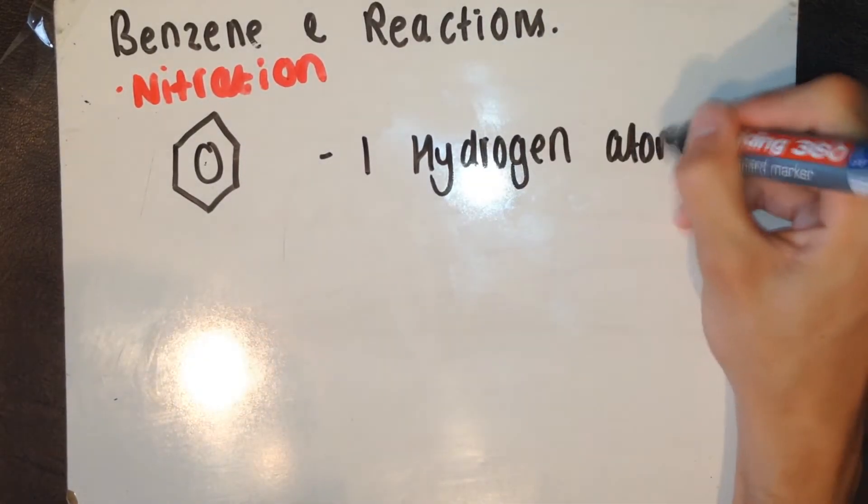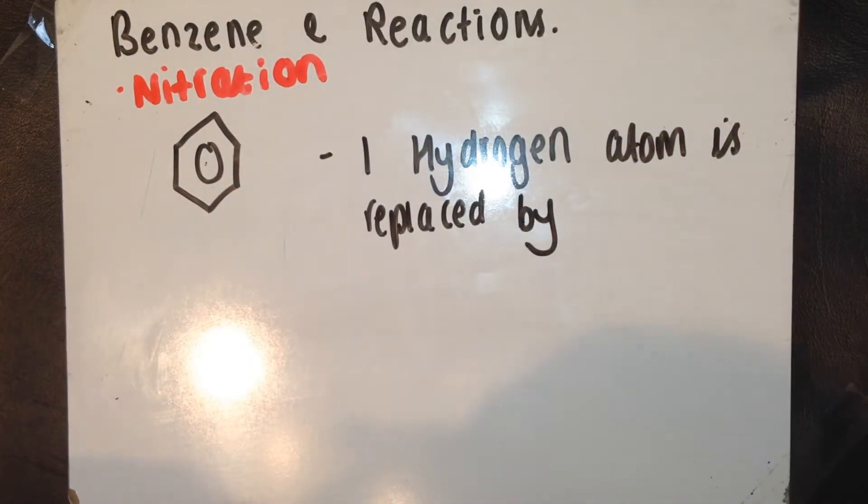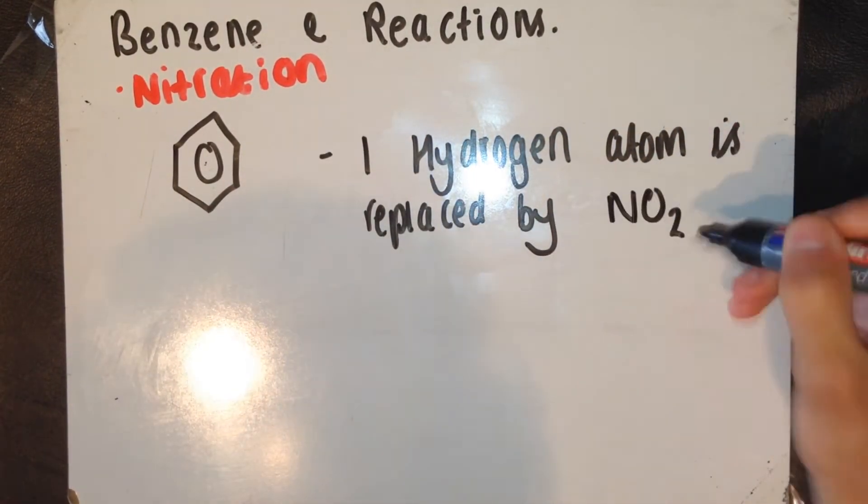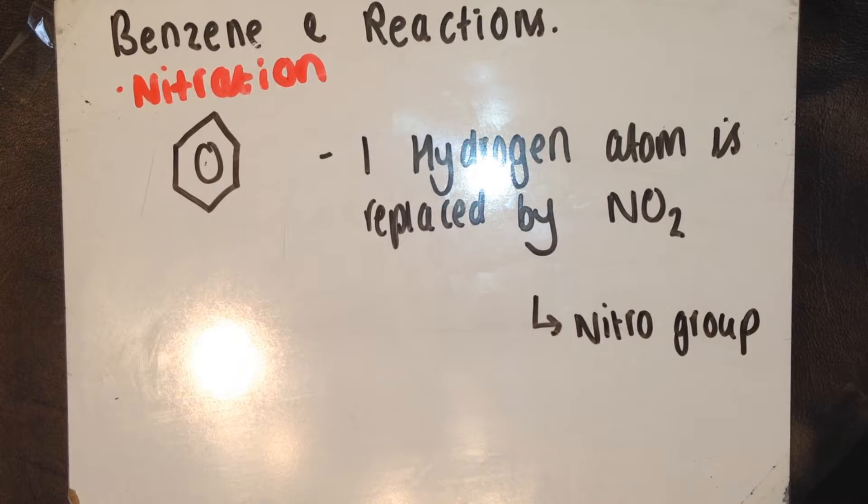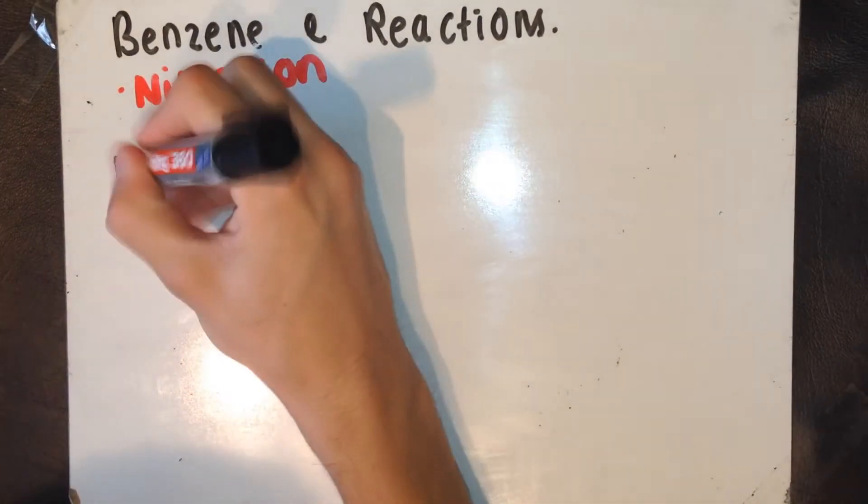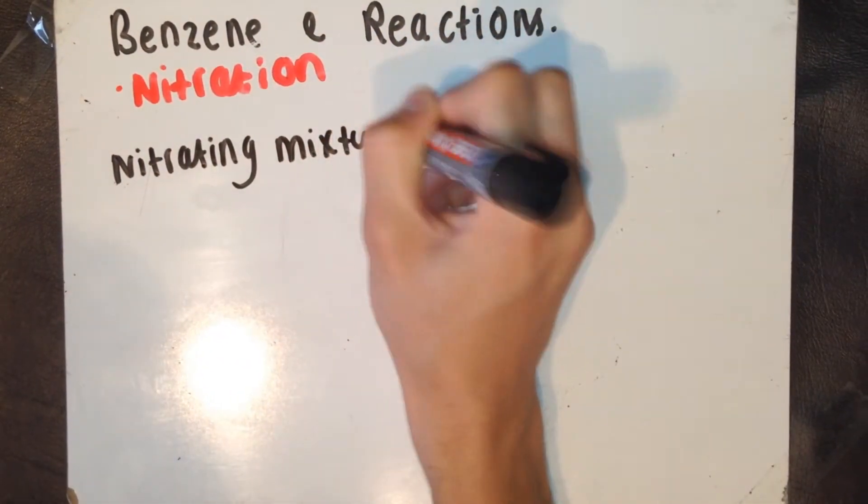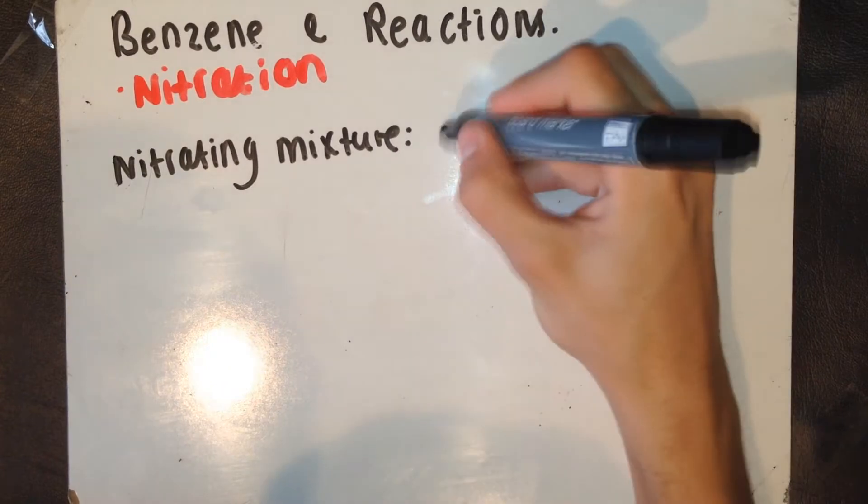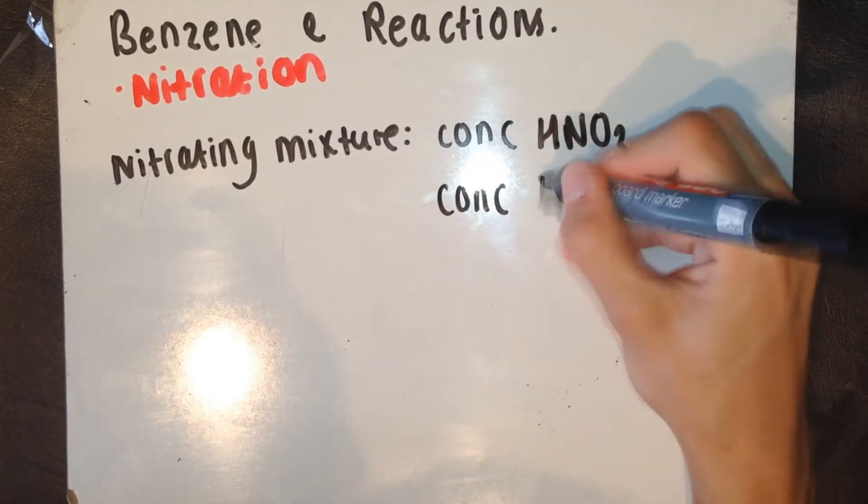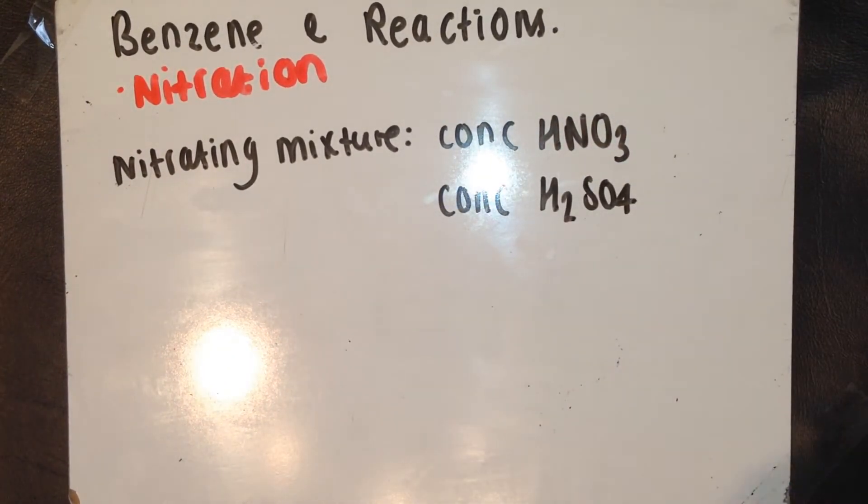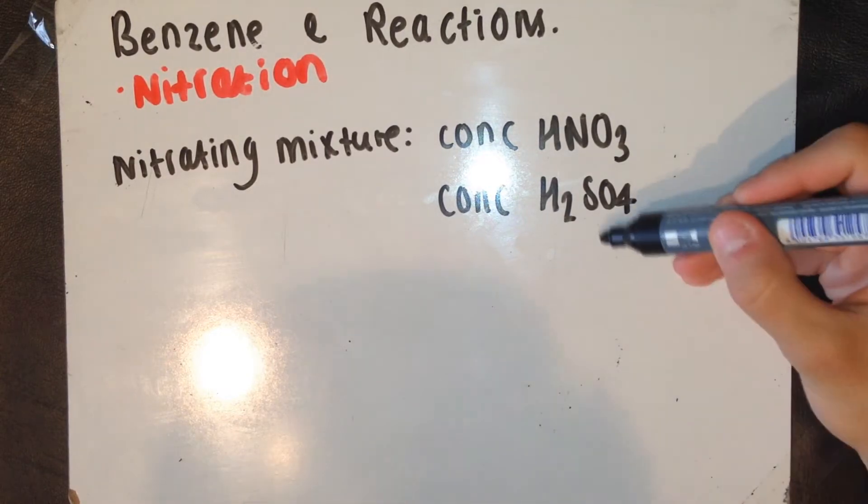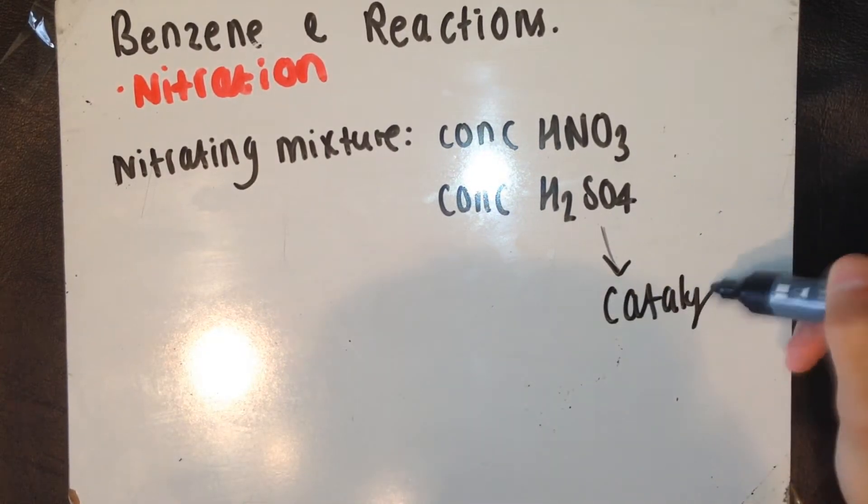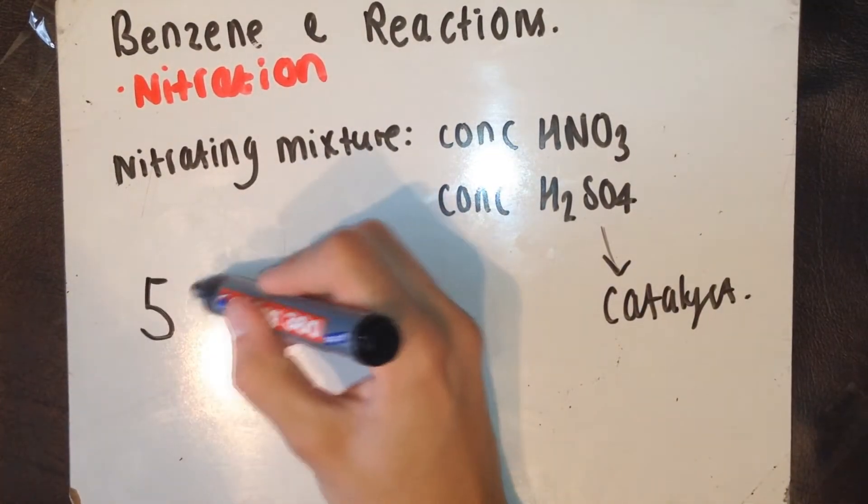I'm going to now talk about nitration. In nitration, one of the hydrogen atoms in the benzene is replaced by a nitro group, NO2. So, benzene reacts with a mixture of concentrated nitric acid, HNO3, and concentrated sulfuric acid, H2SO4. Later on in the video, I'll explain how H2SO4 acts as a catalyst here. This reaction takes place at 50 degrees.